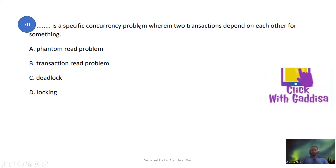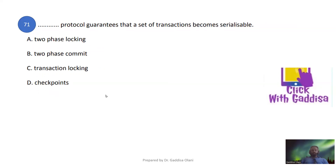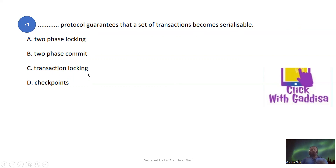Deadlock is a specific concurrency problem wherein two transactions depend on each other — creating a circular dependency. The two-phase locking protocol guarantees that a set of transactions is serializable, ensuring serializability through a locking mechanism.